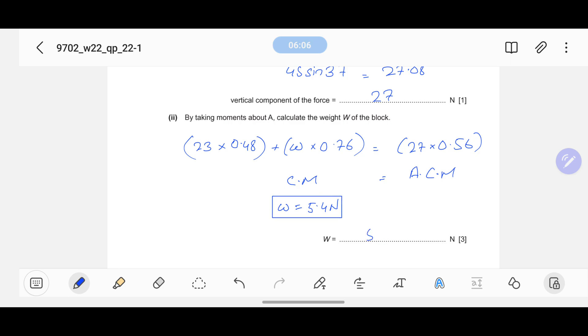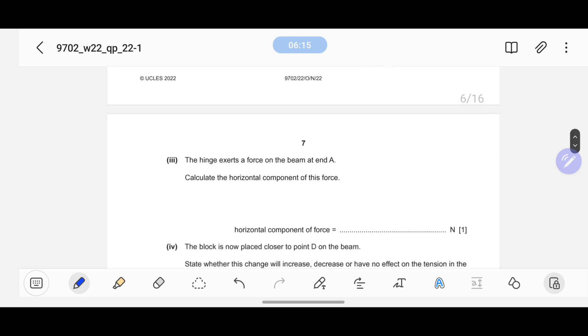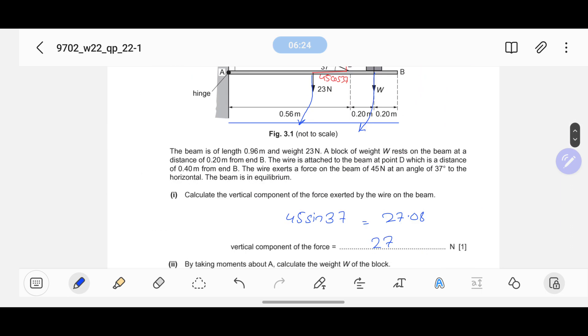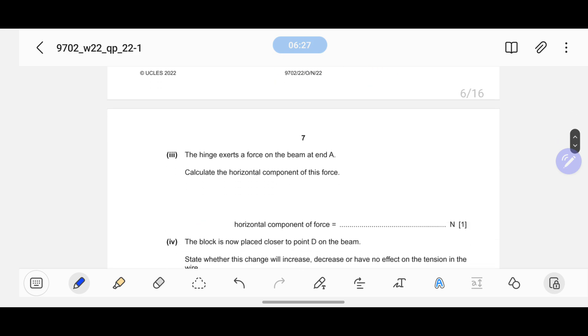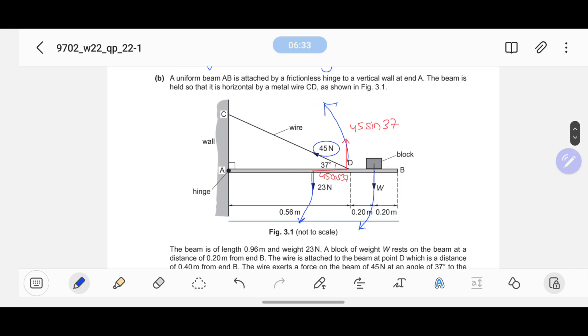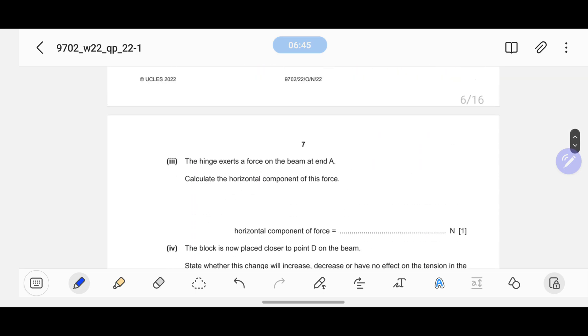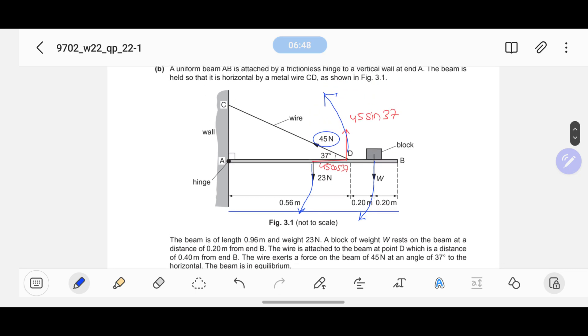The hinge exerts a force on the beam at end A. Calculate the horizontal component of this force. There's only one counter of hinge force that is horizontal - that is the wire extension. The horizontal component of this wire extension is equal to the hinge, so that would be 45 cos 37.